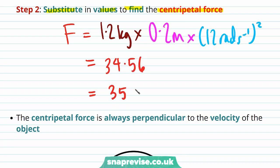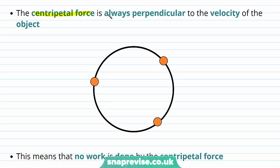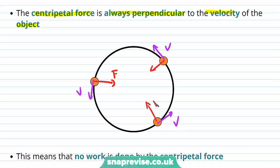This is equal to 35 newtons to two significant figures. The centripetal force is always perpendicular to the velocity of the object. We know the instantaneous velocity is always tangential to the circle because it's perpendicular to the radius. And this means that it's also perpendicular to the centripetal force F, which always acts towards the centre of the circle.